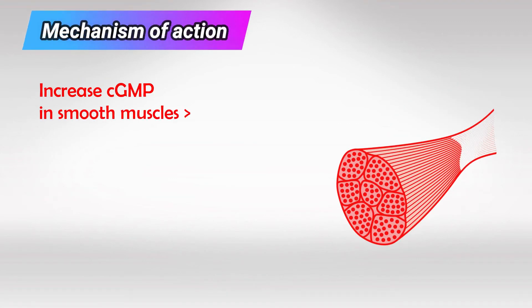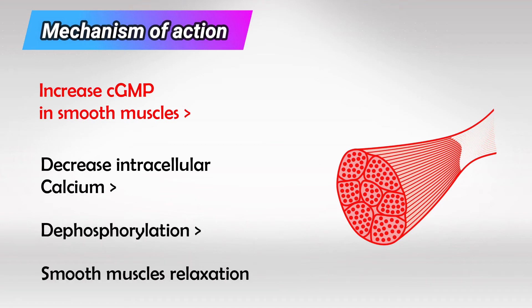This is achieved by increasing cyclic GMP within the smooth muscles of the veins, which decreases intracellular calcium and causes dephosphorylation.